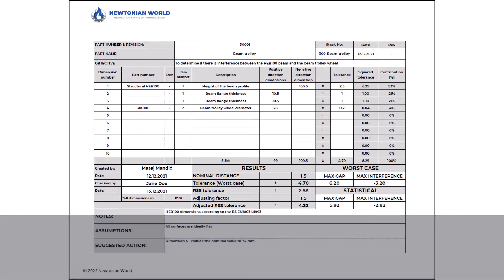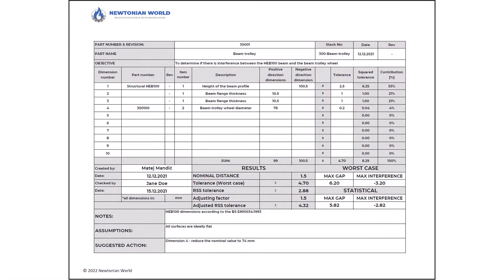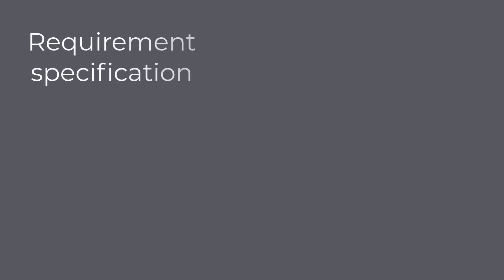In addition to previously mentioned documents, we can also encounter the Requirement Specification. The requirement specification is defined as the document compiled and evaluated with the requirements from the markets, customer, authorities, and the company itself. These requirements are usually stated in the form of wishes, and they are usually not measurable. For example, the product must be robust, strong, and waterproof. This type of document describes what needs to be built and not how.